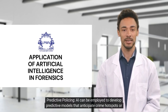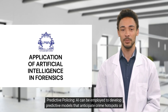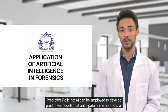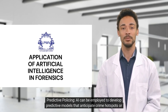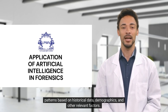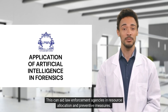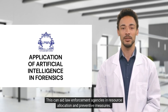6. Predictive Policing: AI can be employed to develop predictive models that anticipate crime hotspots or patterns based on historical data, demographics, and other relevant factors. This can aid law enforcement agencies in resource allocation and preventive measures.